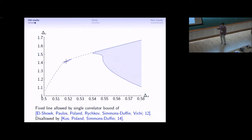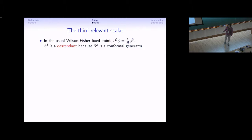And it was. They assumed that sigma and epsilon were the only relevant scalars that were primary under the conformal group, and our model actually has a third. This is the operator that we've been calling phi cubed.